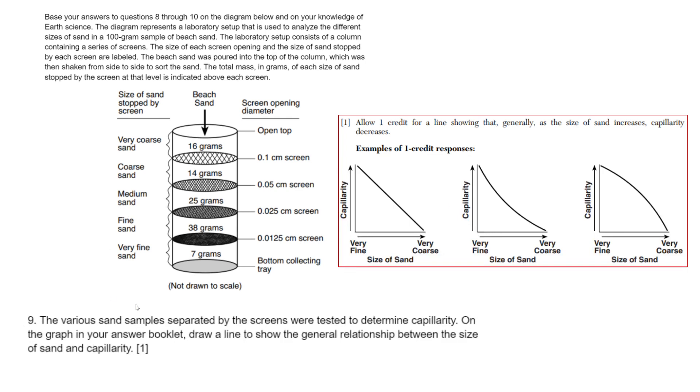Number nine: The various sand samples separated by the screens were tested to determine capillarity. On the graph in your answer booklet, draw a line to show the general relationship between the size of the sand and capillarity. Your graph should look like one of these graphs. As you're going from very fine to very coarse sand, meaning your size of sand is increasing, your capillarity should go down. You can either do a straight line or a curved line.